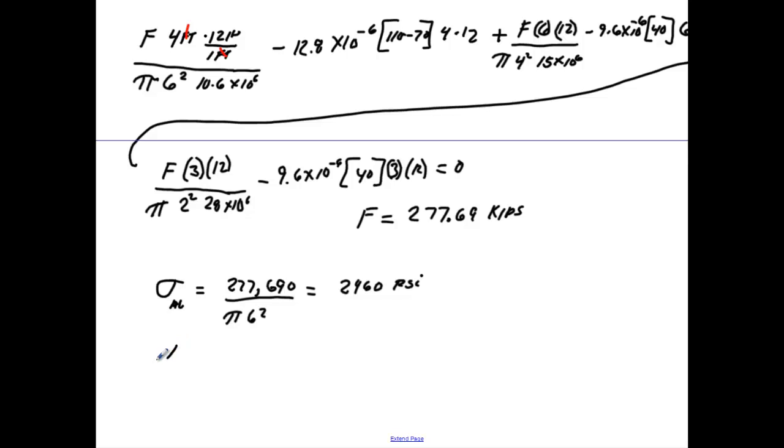I use the same thing for the bronze. I use the same load throughout. Pi. And it's 4 squared. Work that. And it gives you 5,520 psi.